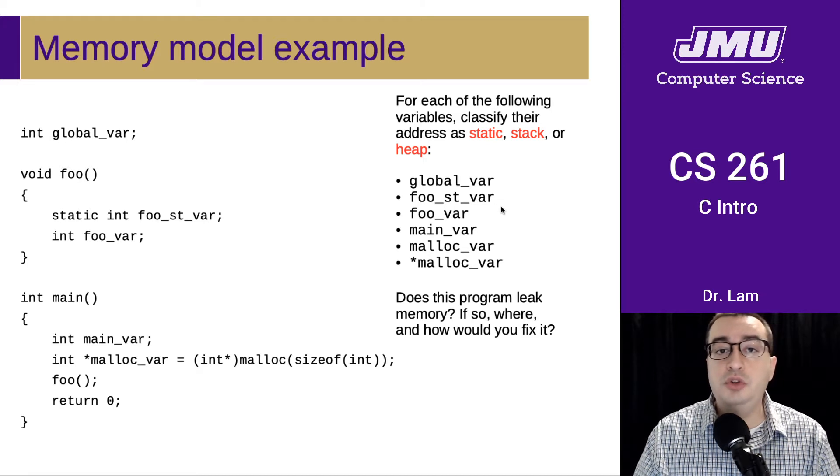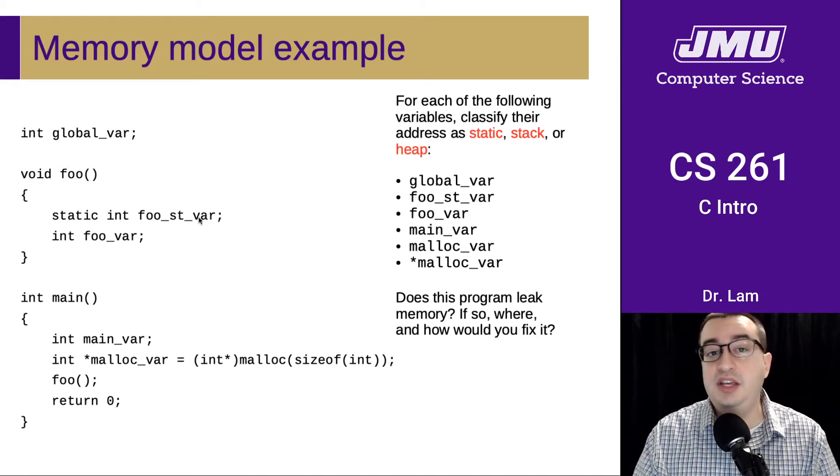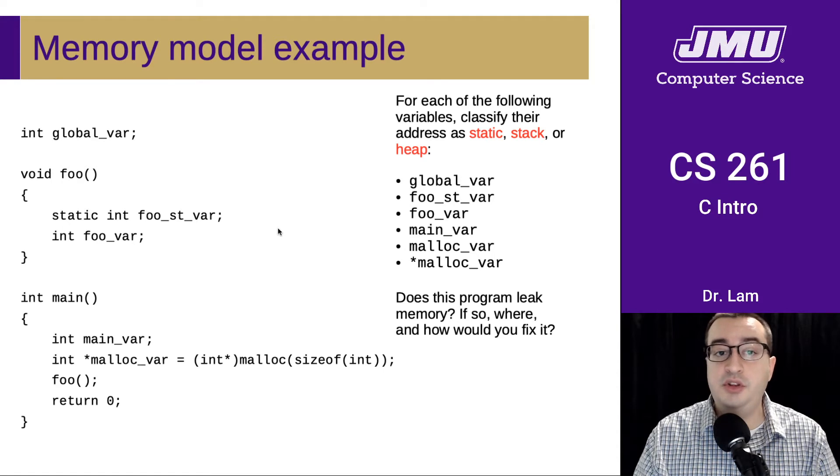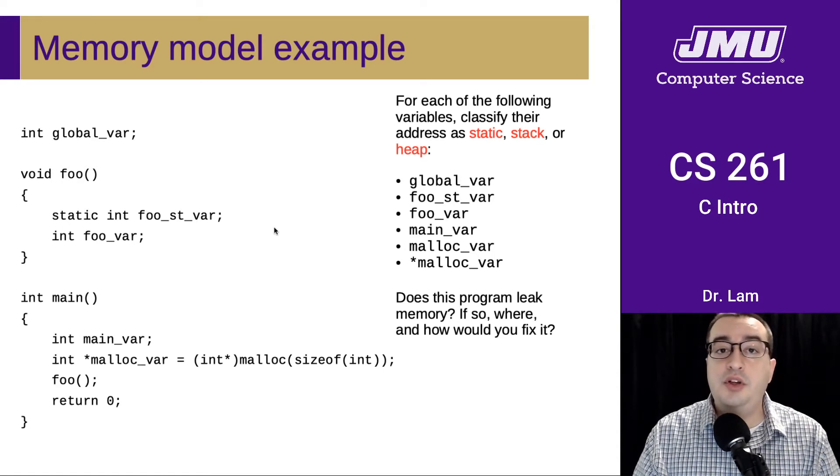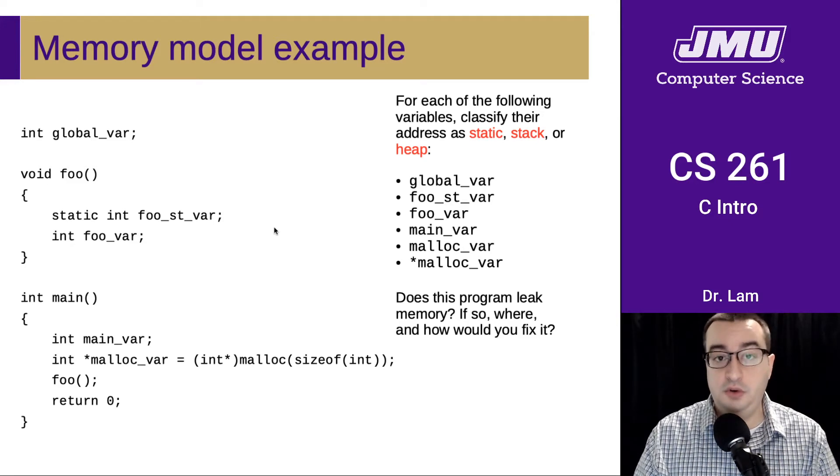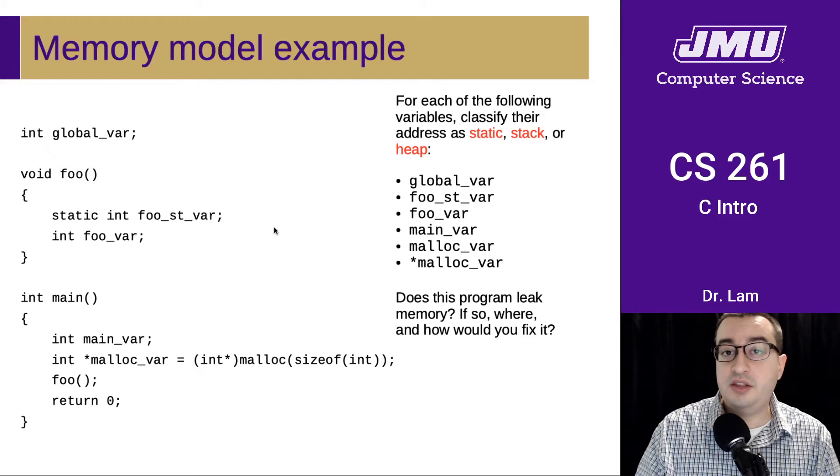Then we have two local variables here. So we have foo_st_var and foo_var. These are both defined inside of the variable foo. And so they're both going to be local to foo, which means that their scope is only visible inside of foo.